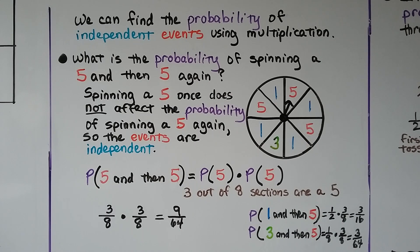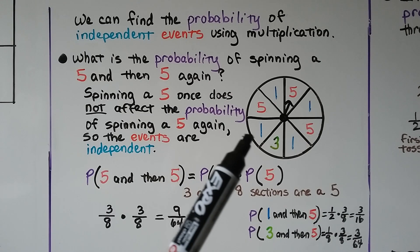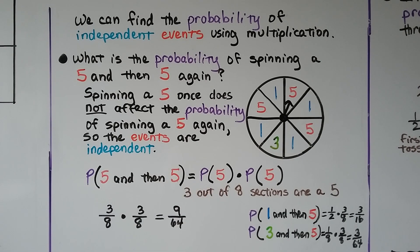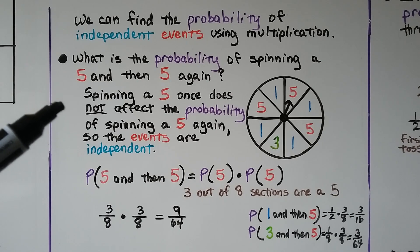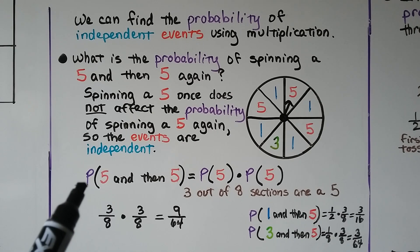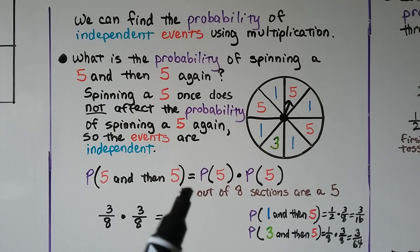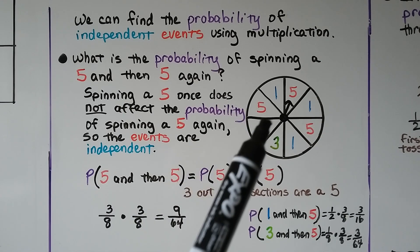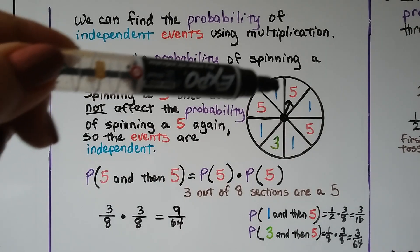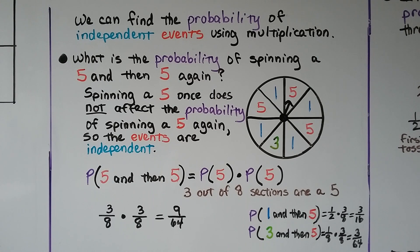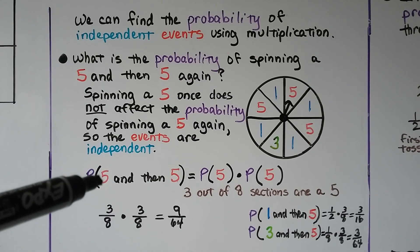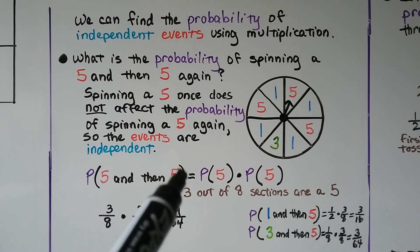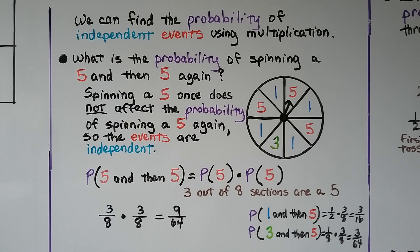We can find the probability of independent events by using multiplication. Here we have a spinner and we need to find the probability of spinning a 5, then spinning again and getting a 5 again. Spinning a 5 once does not affect the probability of spinning a 5 again, so the events are independent. We have three 5s on this spinner out of eight sections, so the probability of spinning one 5 is 3/8. To get a 5 and then a 5 again: 3/8 times 3/8 equals 9/64.